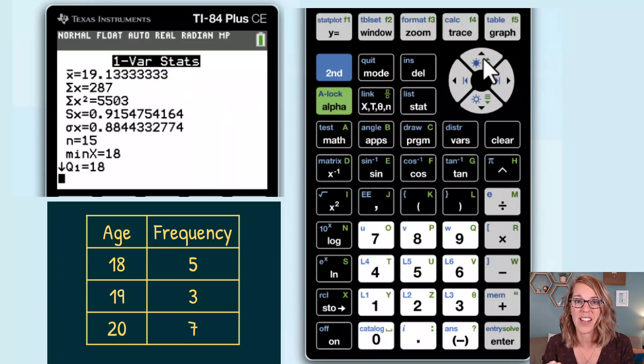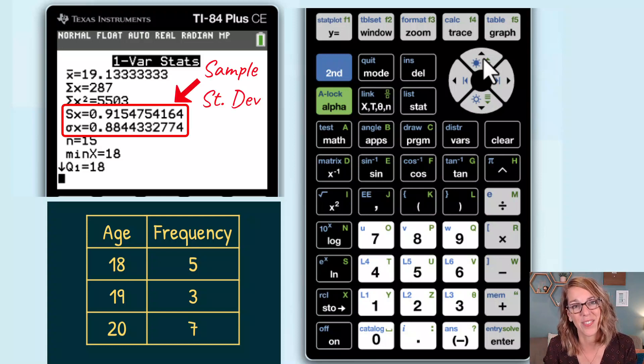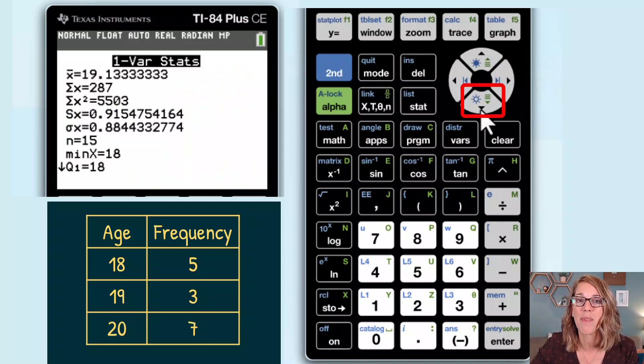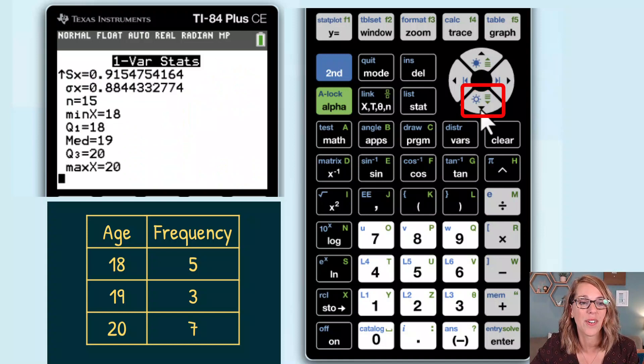A couple of measures down from that, I've got my standard deviations, S for the sample, sigma for the population. And if I use my down arrow to scroll further, I get even more measures than that.